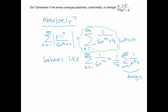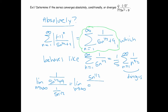To show that they behave the same way, we take the limit of the terms. I'm going to write this as 1 over 5n to the 1/2 plus 9, divided by 1 over 5n to the 1/2. That equals 5n to the 1/2 divided by 5n to the 1/2 plus 9, and that means this series diverges too.